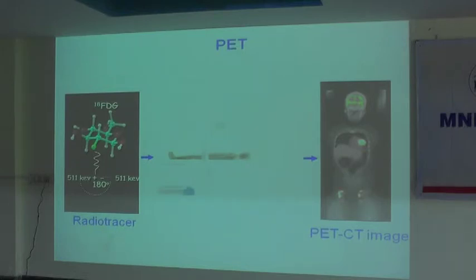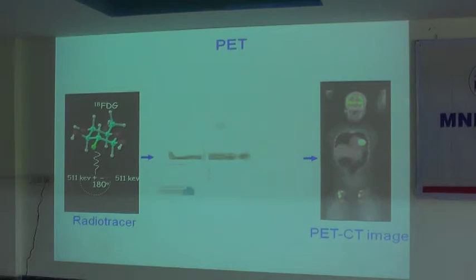Because we are chemistry-focused, we take a molecule and tweak it in a way that we can put a radiolabel on it. Once you inject the radiolabeled dose into the patient or mouse, you acquire the PET scan, and it allows you to see where the radioactivity is.